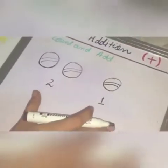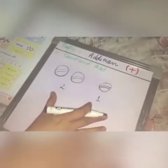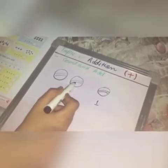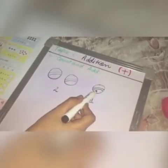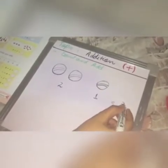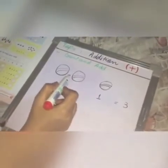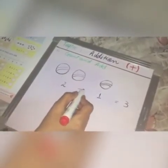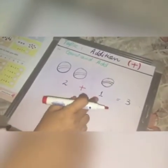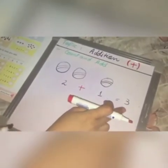Now what is the total number of balls? Count them — one, two, three. Now Ali has three balls. Whenever we add two numbers, we write a plus sign. Two plus one is equal to three.